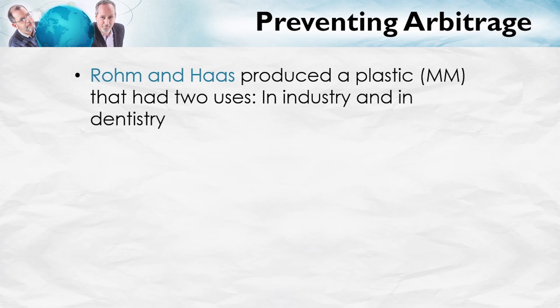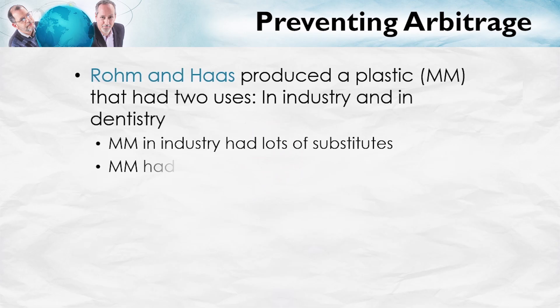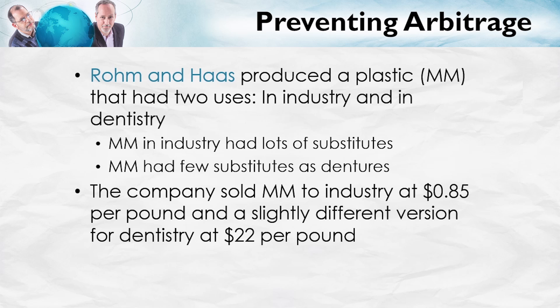Smuggling is just an illegal form of this kind of arbitrage — a type of arbitrage which breaks down price discrimination. Now, markets can be segmented in more ways than just geographically. For instance, Rohm and Haas, a producer of materials, had a plastic I'll call MM that had uses in industry and also in dentistry, as in dentures. MM in industry had a lot of substitutes, but as dentures there were very few substitutes. So the firm price discriminated — it sold MM to industry at about 85 cents a pound, and sold a slightly different version for dentistry at $22 a pound. With a price difference like that, entrepreneurs started to buy up industrial MM, convert it for dentures, and resell it at the higher price.